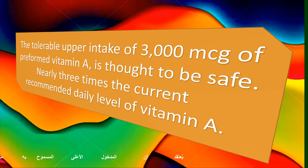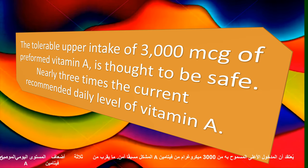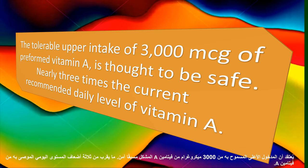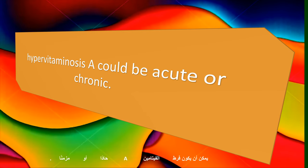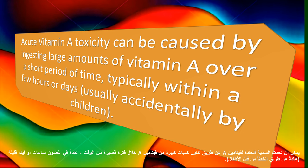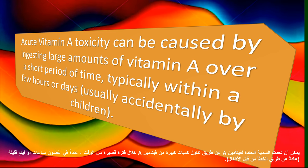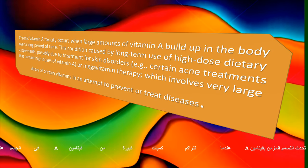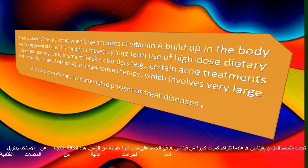The tolerable upper intake of 3,000 mcg of preformed vitamin A is thought to be safe — nearly three times the current recommended daily level of vitamin A. Hypervitaminosis A could be acute or chronic. Acute vitamin A toxicity can be caused by ingesting large amounts of vitamin A over a short period of time, typically within a few hours or days, usually accidentally by children.